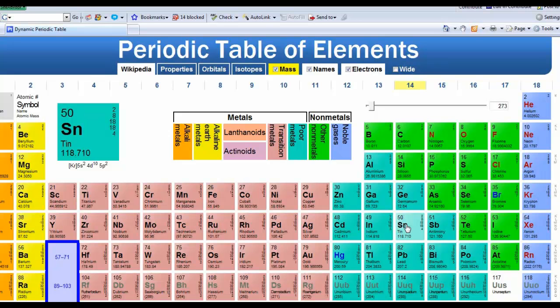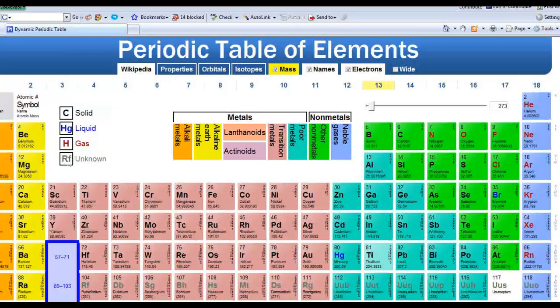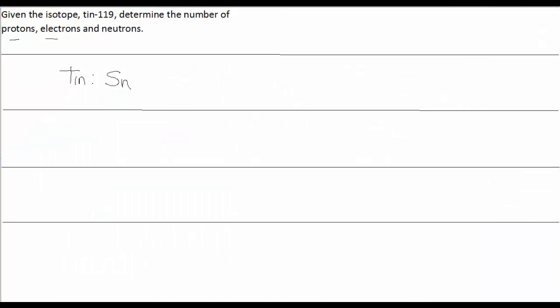And remember, the integer number in the periodic table, not the decimal number, the integer number, is the atomic number, which is the number of protons. So if we agree that there are 50 protons in any type of Tin atom, which is the atomic number, then we've pretty much answered the proton question.